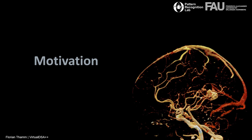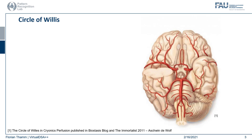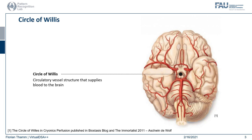Let's start with the motivation. With this image on the right hand side we can already see where this journey is going. It's about our blood vessels in our brain and how they are visualized. Before we dive into this visualization topic, let's talk about the structure itself we want to visualize, namely the circle of Willis. All the blood that has to go into our brain will sooner or later end up in the circle of Willis.